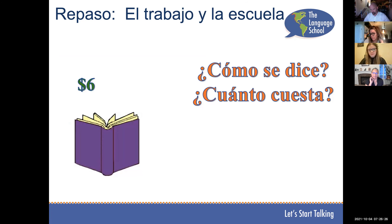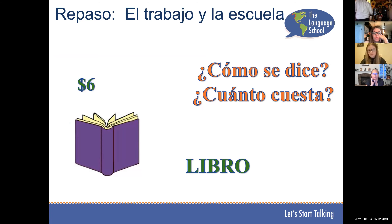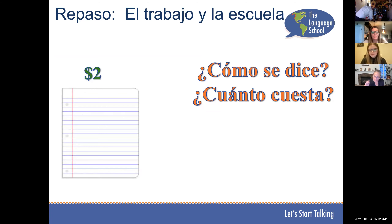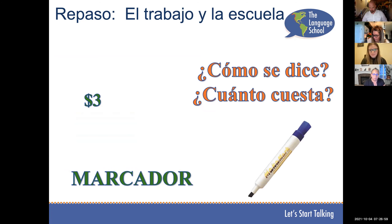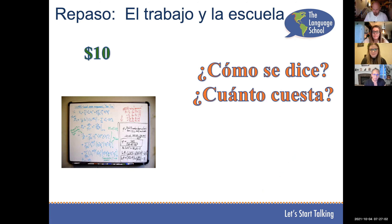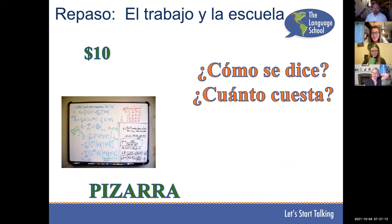¿Cómo se dice book? Libro. ¿Cuánto cuesta? Seis dólares. ¿Cómo se dice paper? Papel. ¿Cuánto cuesta? Dos dólares. ¿Cómo se dice marker? Marcador. ¿Cuánto cuesta? Tres dólares. ¿Cómo se dice whiteboard? Pizarra — even easier, it's just like saying pizza. Pizarra.